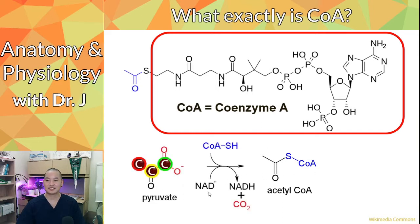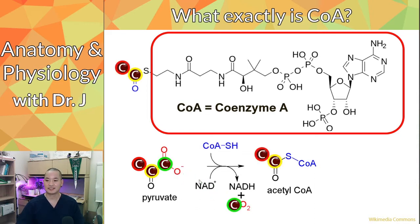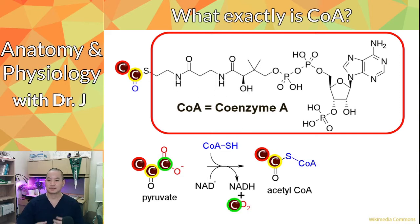You have pyruvate, and you lose the carbon by popping off carbon dioxide, leaving a very, very small molecule. What you then do is attach that small two-carbon acetyl group to a bigger molecule. The acetyl group would be very small and hard for your cells to keep in place and work with.